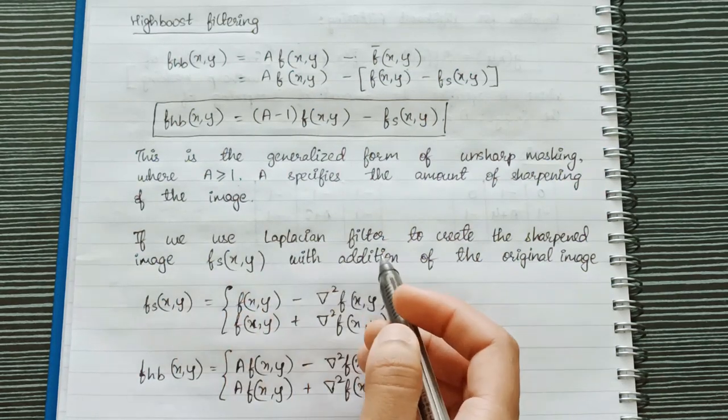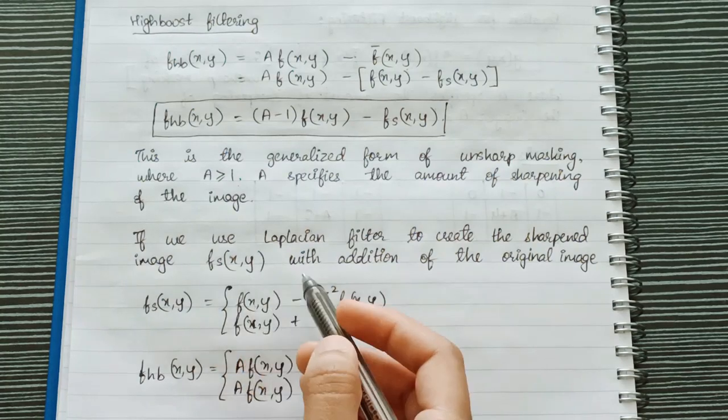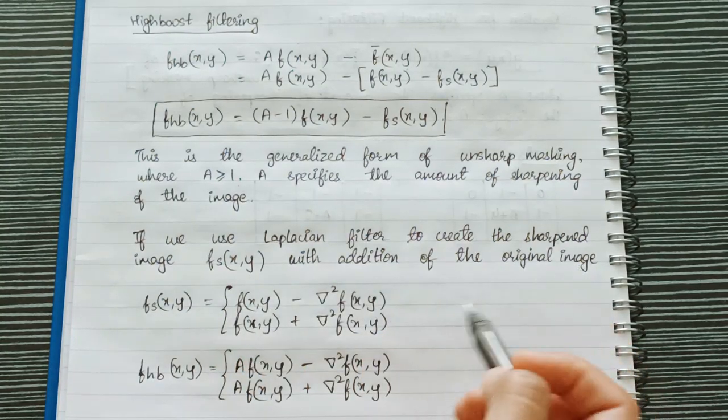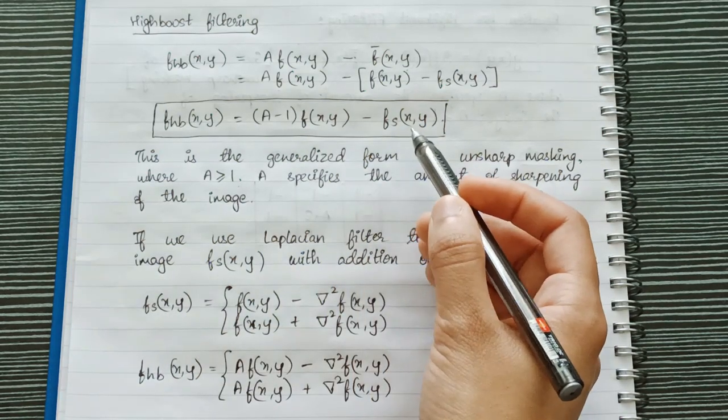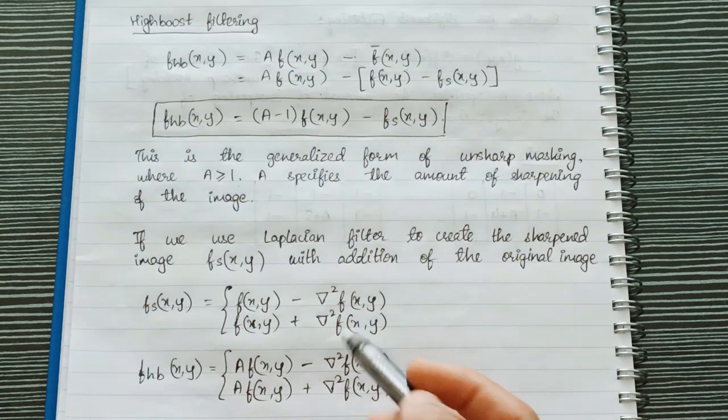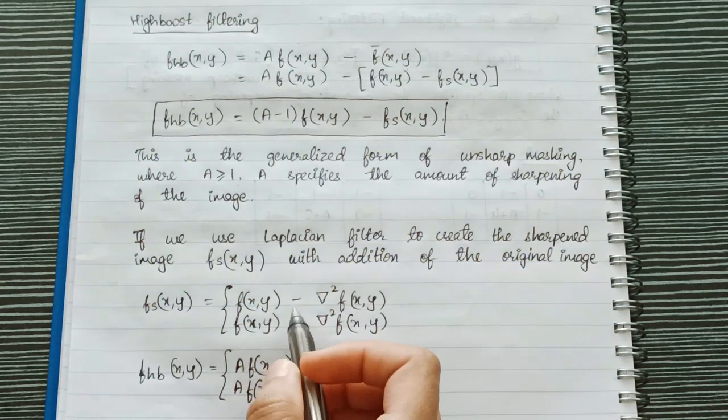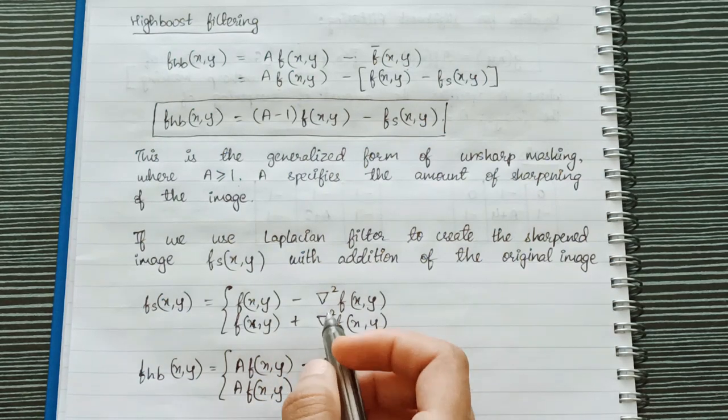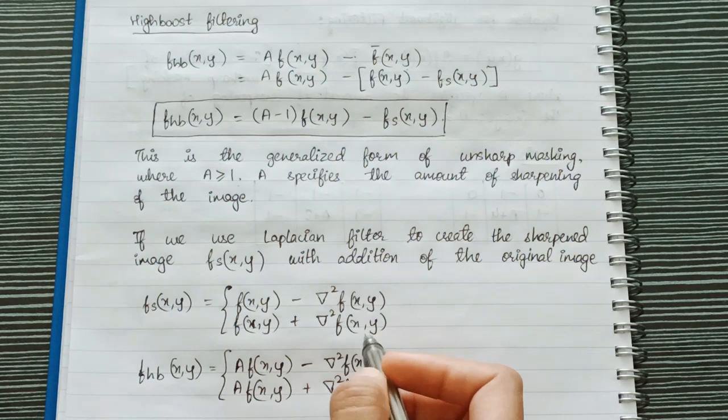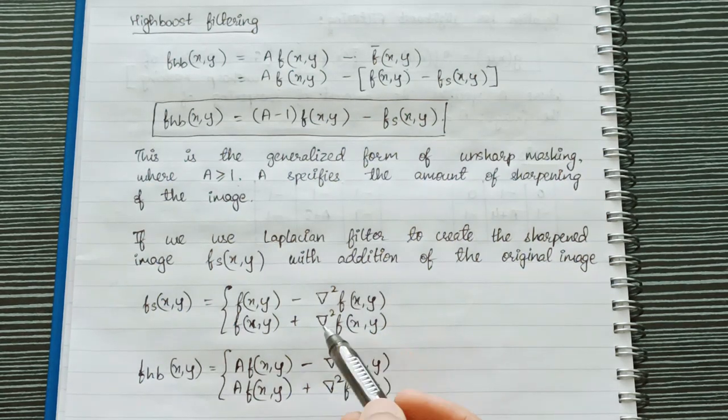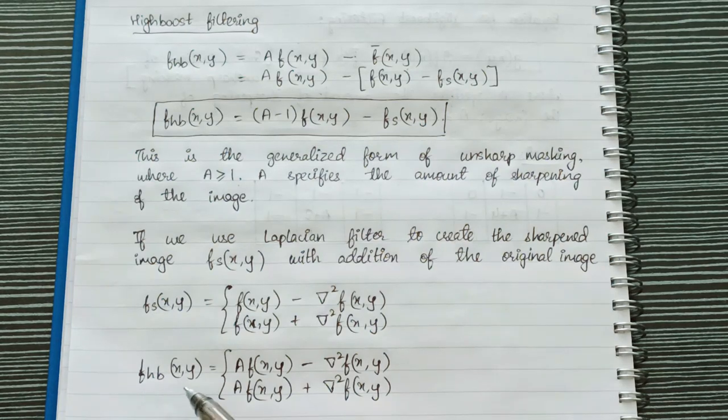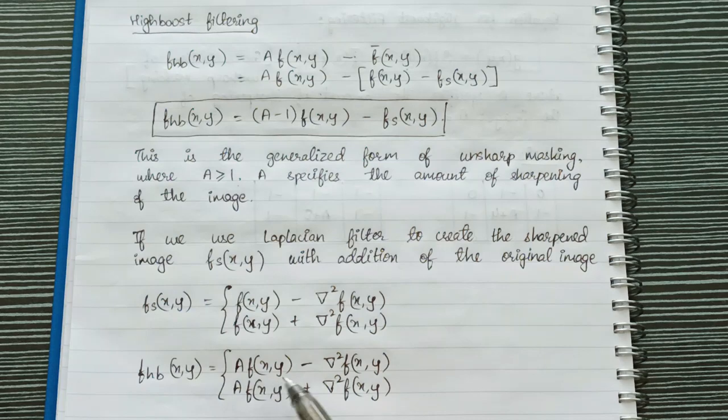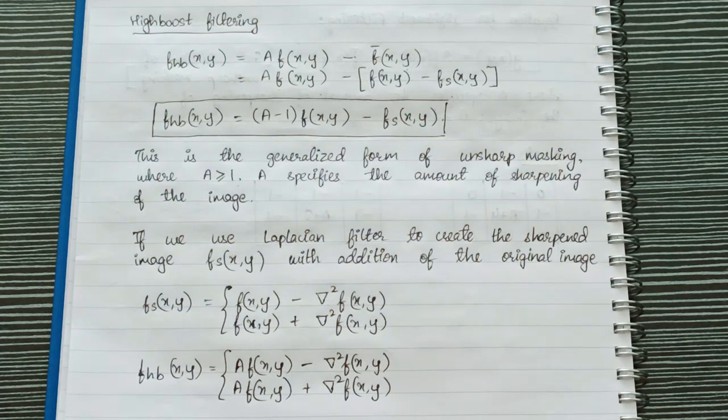Now if we use laplacian filter to create the sharpened image fs(x,y) with addition of the original image then our equation would be something like this. So what are we doing here? We are applying laplacian filter on it to sharpen the image. So either of these will be the equations for it where ∇²f(x,y) is the laplacian filter. So if we applied this then our high boost filtering formula would look something like this: fhb(x,y) = A*f(x,y) - ∇²f(x,y) or plus.